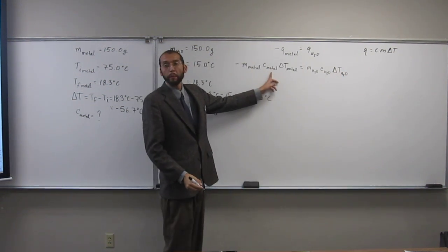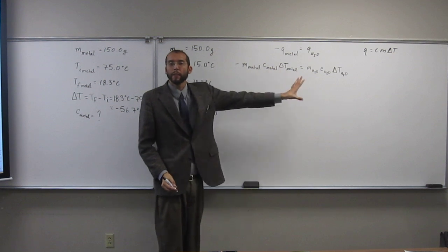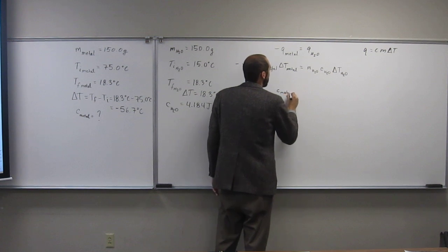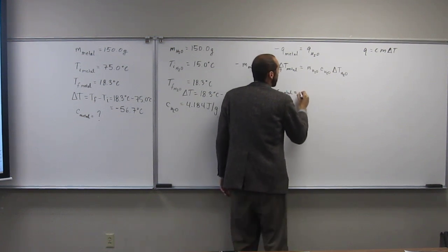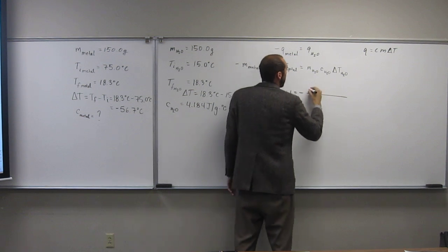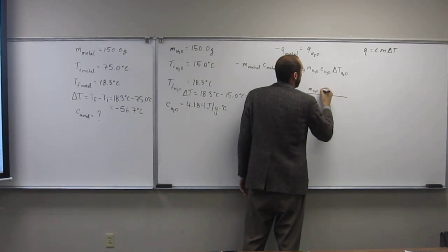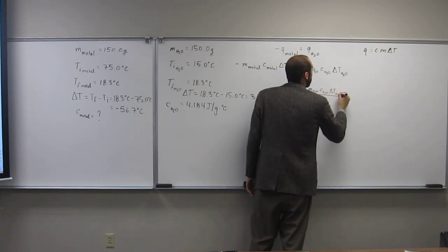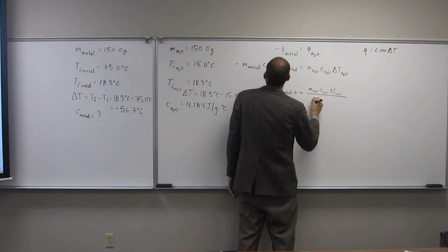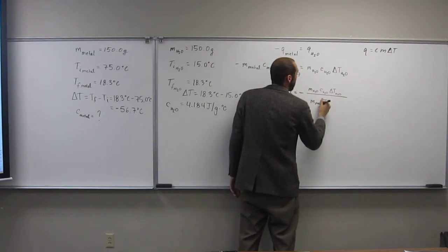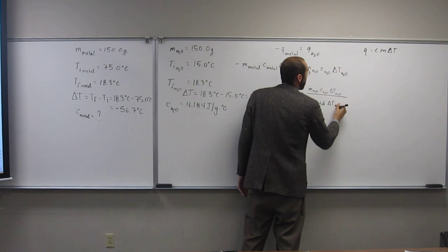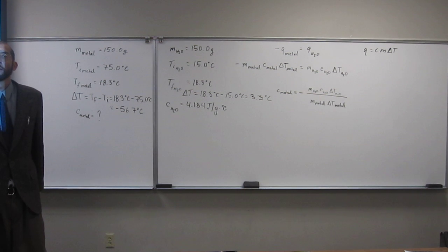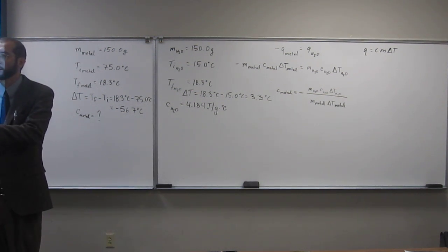Okay? So we're looking for C metal here. So we have to isolate that variable. So in this case, C metal equals negative M H2O CH2O delta T H2O divided by M metal delta T metal. Okay? So we're going to see how we've gotten there. You good with that?